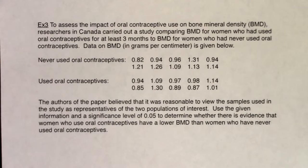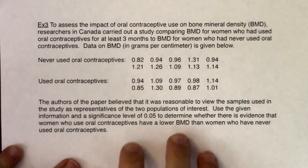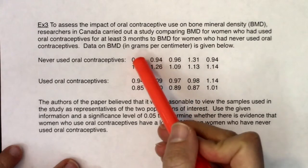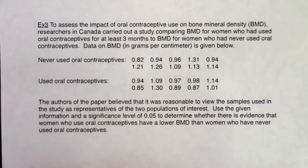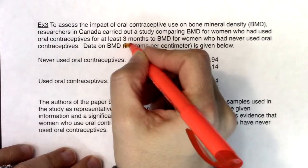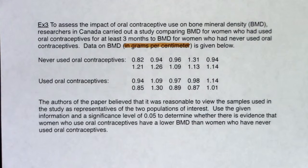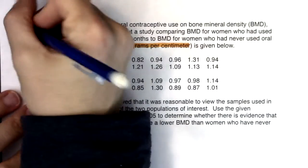Going through this, first I need to assess whether I'm in mean land or proportion land. Looking at the data, I can tell right out of the gate that I'm in mean land because I see numbers that are over one, and none of our proportions will ever be larger than one. Plus, I saw units here — grams per centimeter. Anytime you see units you know you're going to be in mean land, because proportions' units are percentages — relative frequencies — and that's not the case here. So I've got mean land.